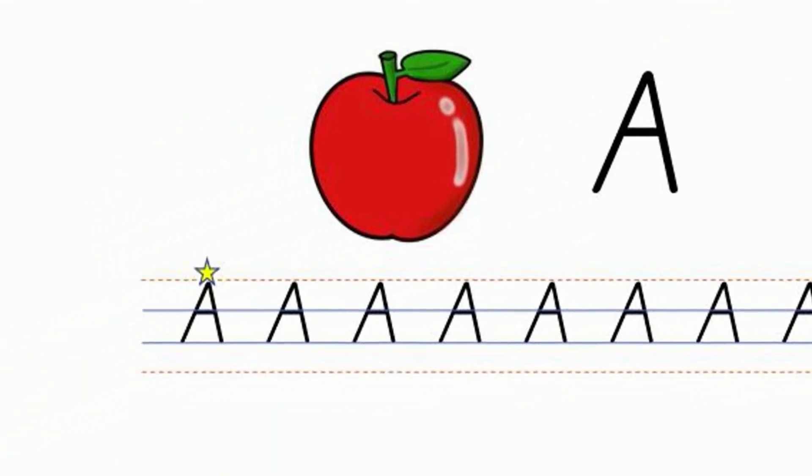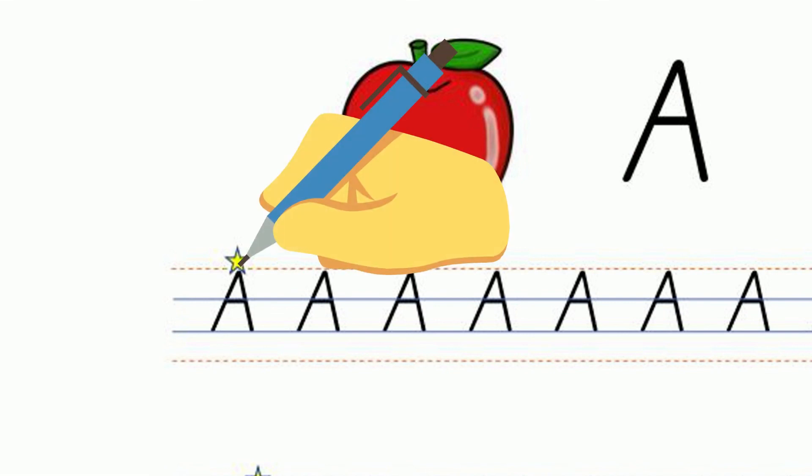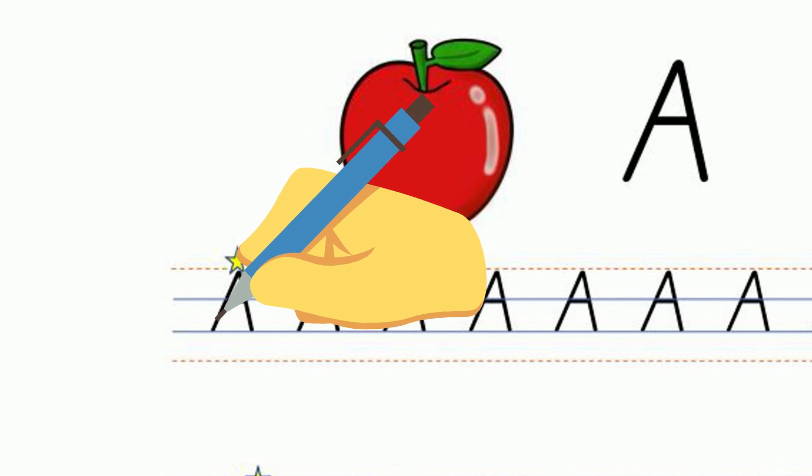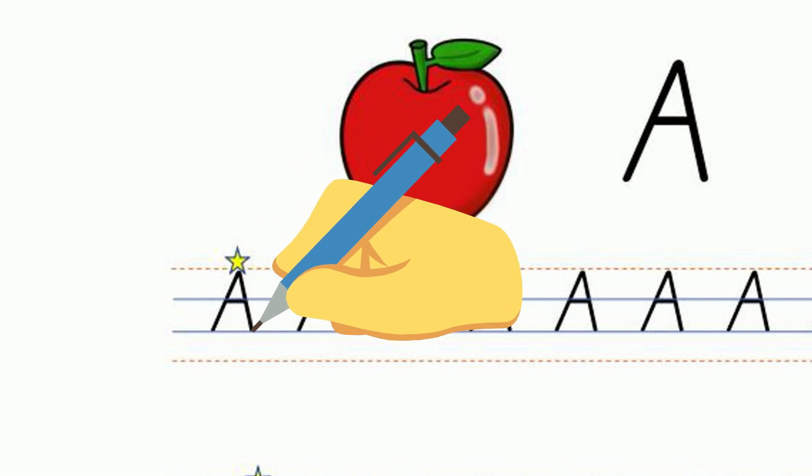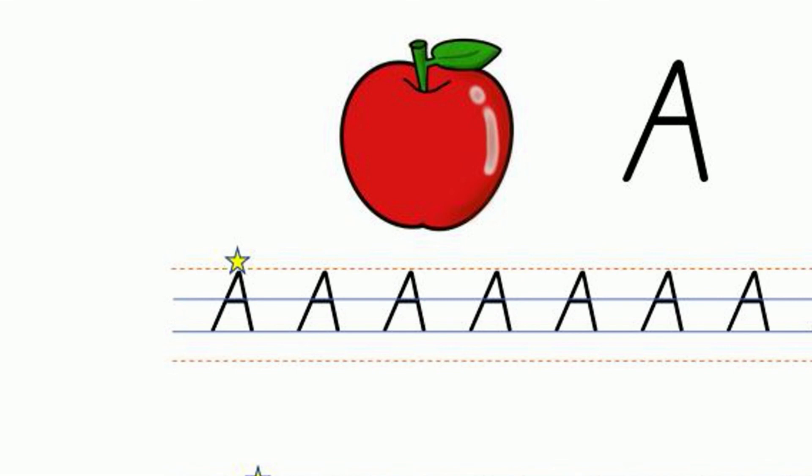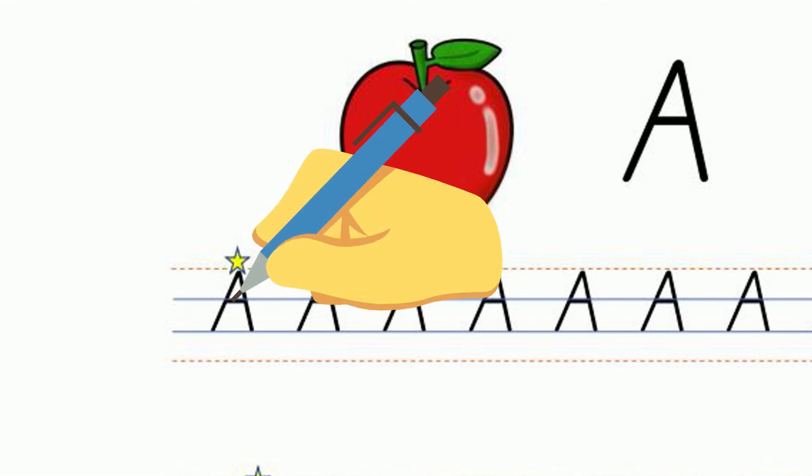When we write the capital letter A in the lines, we start at the starting star on the red line. One straight line down to the bottom solid line. Pencil off, back to the starting star and another straight line down to the solid bottom line. Pencil off and then one straight line across, straight through that middle line there.